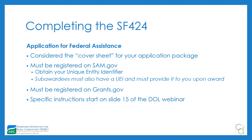Starting with the SF-424, the form is pretty straightforward, but there are some sections you don't have to fill in and some specific pieces you may not know about if you've never completed one. Make sure you have your unique entity identifier from SAM.gov. If you're not already registered, start that process immediately. Also make sure your subawardees know they must also be registered and have a UEI once implementation occurs — it doesn't cost anything, so start that process as soon as possible.